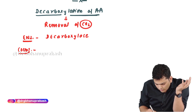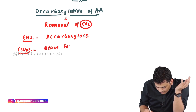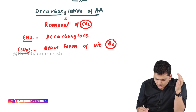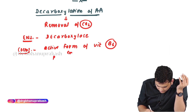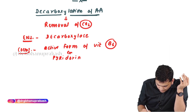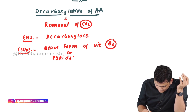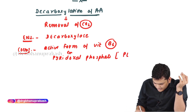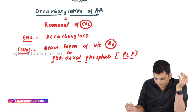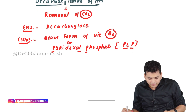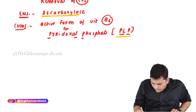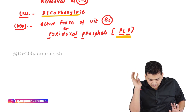What is more important is the coenzyme. The coenzyme for decarboxylation of amino acids is the active form of vitamin B6. Vitamin B6 is called pyridoxine, and its active form is pyridoxal phosphate, abbreviated as PLP. So the enzyme is decarboxylase and the coenzyme is PLP — pyridoxal phosphate, the active form of vitamin B6.